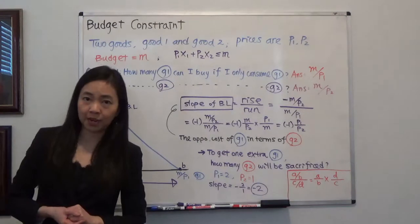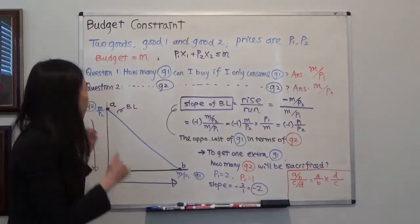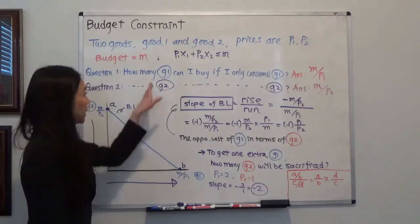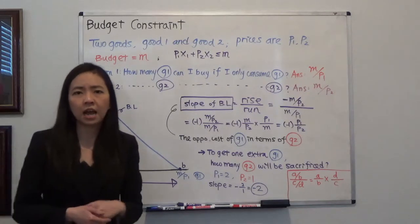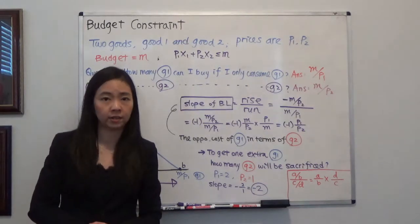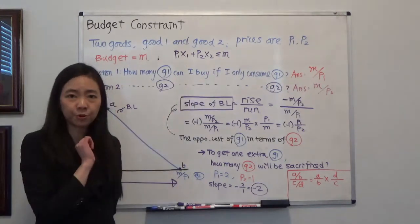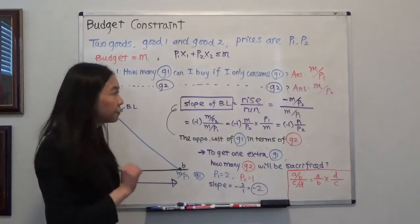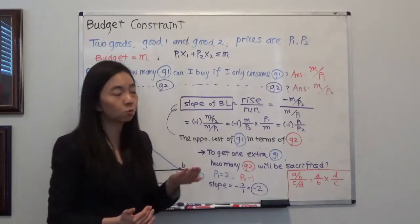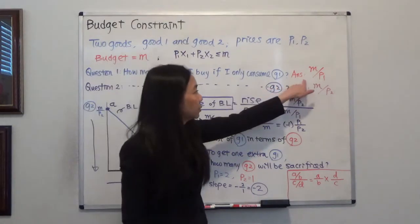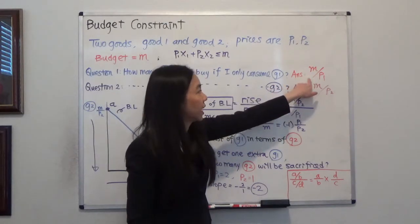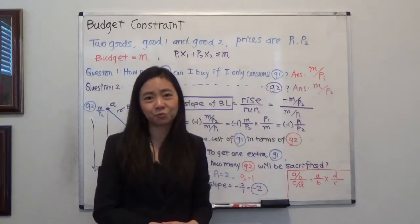The first question you're going to ask yourself is this: if I use all my money to buy good one, then how many units of good one can I purchase? Your budget is M dollars and the price of good one is P1, and therefore if you use all your money to buy good one, you'll be able to purchase M divided by P1 units of good one.